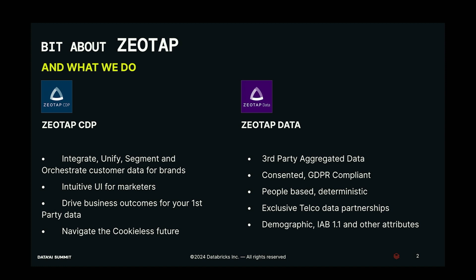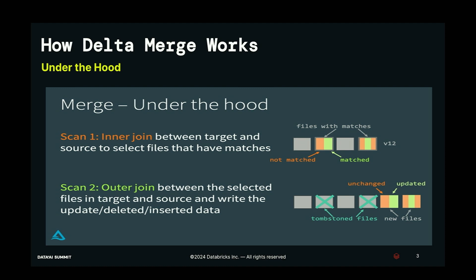We have been using Delta Lake OSS at Zeotap for almost two years. We have migrated close to 500 Spark pipelines to Delta Lake. What we intend to present today is some learnings from our production scenarios and use cases. Let's begin. The first topic is Delta merge — each step in the merge is a compute operation, and wherever we can optimize would mean the entire merge gets optimized.